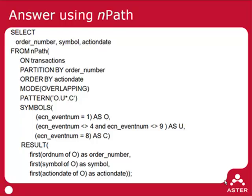The nPath function will go through all the orders in the system and will match every time it sees the pattern open, unfilled, canceled. Every time this pattern is matched, a set of aggregates will be computed. In this case, we're going to look at information about when the order was opened — the order number, the symbol, and the action date of the open. These three things will be the output of nPath, and here we don't do any SQL slicing and dicing of the output.